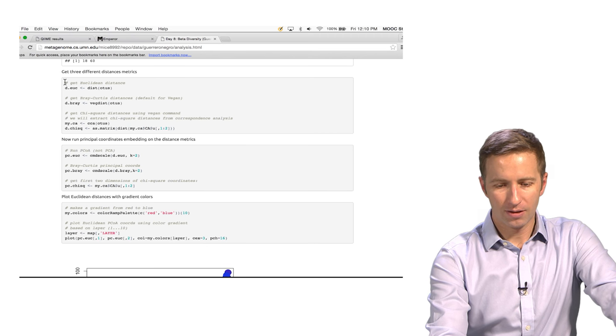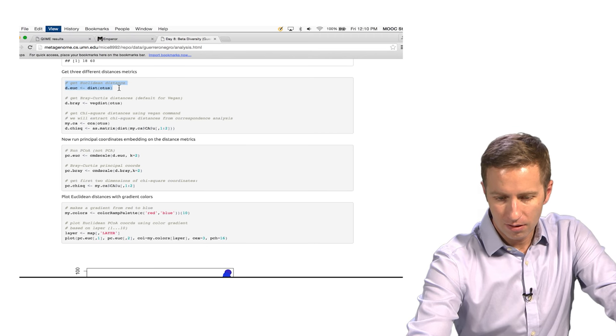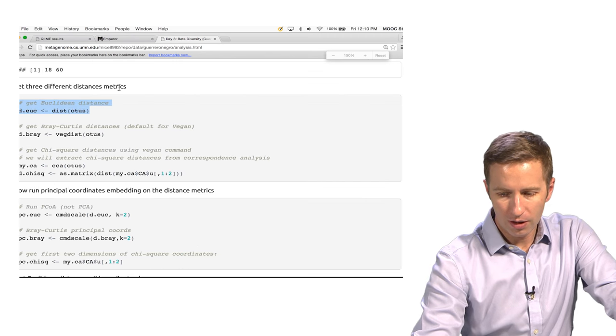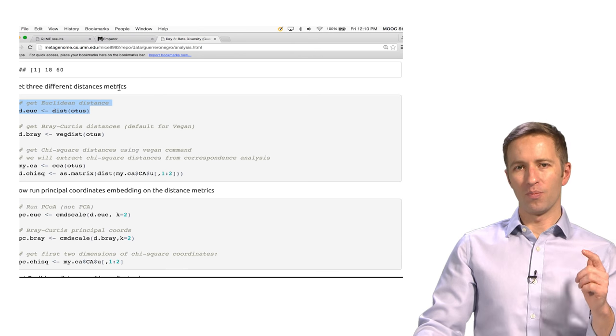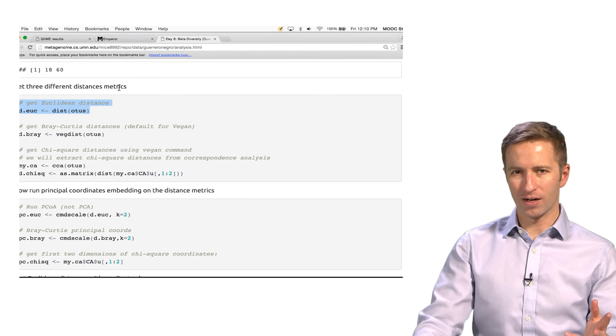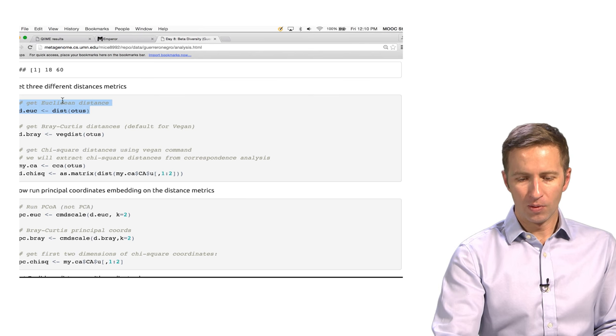load the metadata. That's the mapping file that tells information about the samples. And then here's where we're going to calculate distance. So we're going to calculate three different distance metrics. Euclidean, Bray-Curtis, and chi-square.